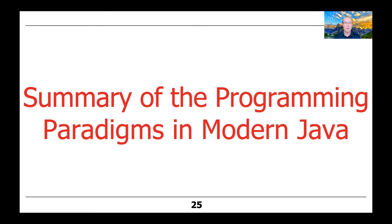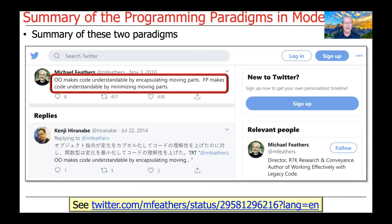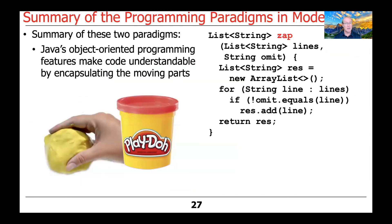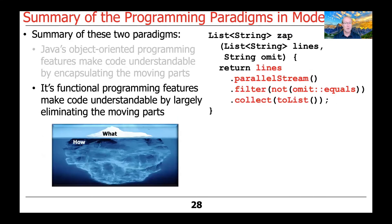Let's summarize the programming paradigms in modern Java. There was a nice tweet by Michael Feathers that said: 'Object-oriented programming makes code understandable by encapsulating moving parts. Functional programming makes code understandable by minimizing moving parts.' Java's object-oriented programming features make code understandable by encapsulating the moving parts, abstracting away implementation details so you don't need to know them to use a method like ZAP. Its functional programming features — such as streams, parallel streams, and other functional capabilities — make code understandable by largely eliminating the moving parts, focusing almost exclusively on what computations to perform, with how left as an implementation detail for the framework or compiler.